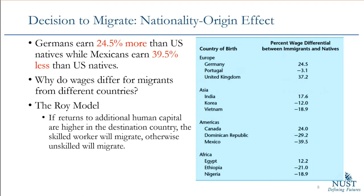This slide tells us that nationality matters. It's not necessarily discrimination — it could also be the impact of origin. For example, if Germans are more skilled than Vietnamese on average, Germans are more likely to get hired at higher wages. This table from George Borjas' book shows that Germans earn 24.5% more than US natives, while Mexicans earn 39.5% less than US natives. Nationality does have an effect — it could be because of skills or because of bias.